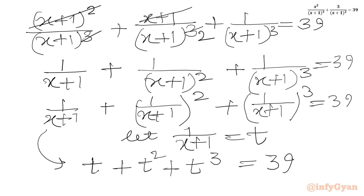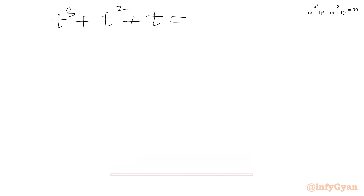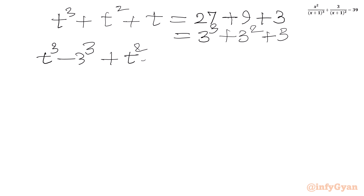So our equation becomes t + t² + t³ = 39. Now we will solve this cubic equation using factorization. I will write t³ + t² + t = 39. We will split 39 as 27 + 9 + 3, which equals 39. So 27 is 3³, 9 is 3², and 3 is 3.